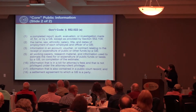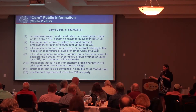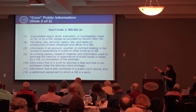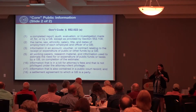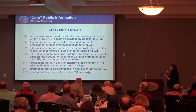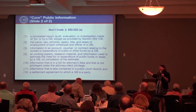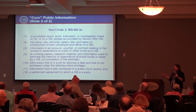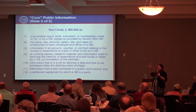Core public information includes: completed reports, audits, or evaluations; employee names, ethnicity, salary, title, and dates of employment; information in account vouchers or contracts relating to the expenditure of funds; working papers including attorney fee bills — those are never withheld in their entirety; information in court records; and settlement agreements. Don't call me telling me you don't have access to your own settlement agreement.